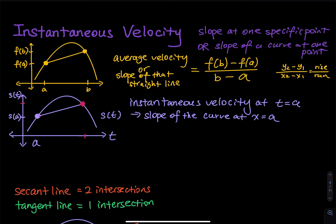You don't need a lot of physics to understand instantaneous velocity. There is a moving object, and the position of this object at any time t can be described by a function. When time equals a certain number, you are able to tell what the position is of this moving object. If you graph this function — it doesn't have to be a linear function — you see a curve. This curve represents the position of a moving object at time t.